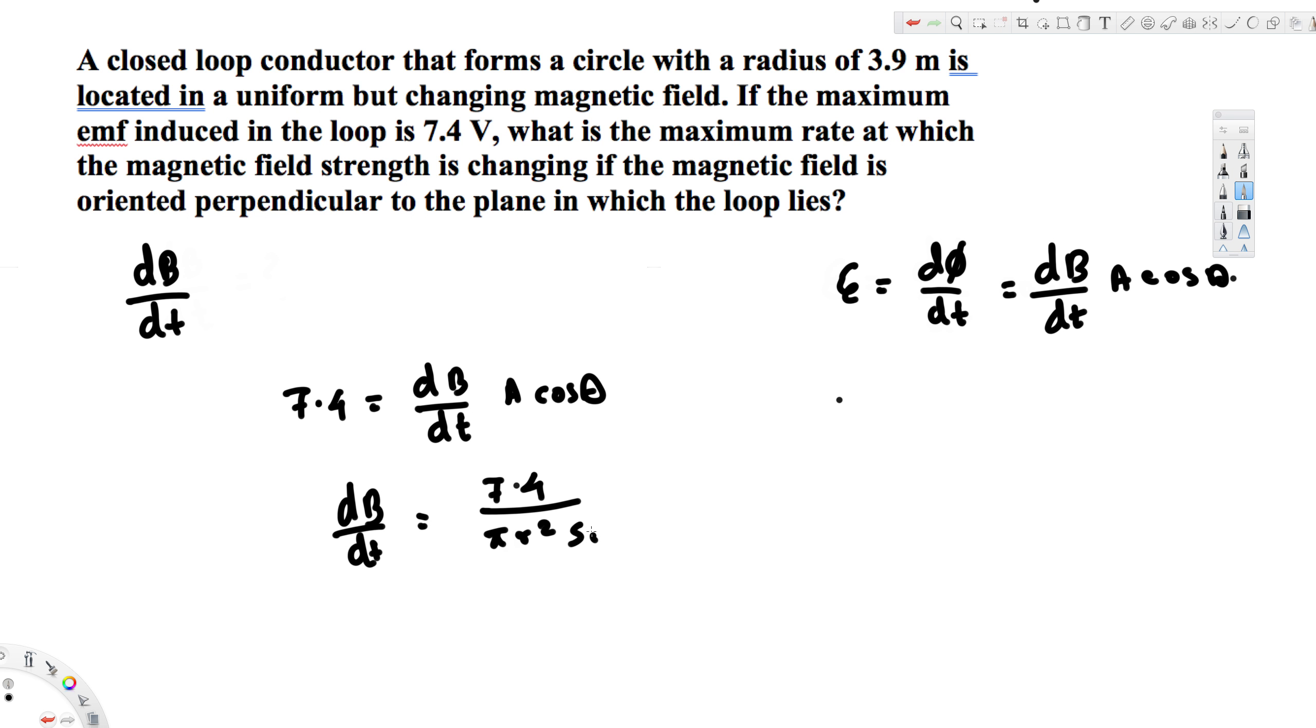The radius is 3.9 meters. Now let's go ahead and plug it in. So 7.4 divided by π times 3.9 squared. Sin 90 is 1, so we can just leave it. If you calculate this, that's going to give you 0.15 tesla per second.